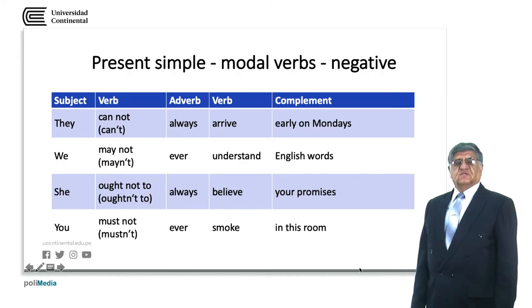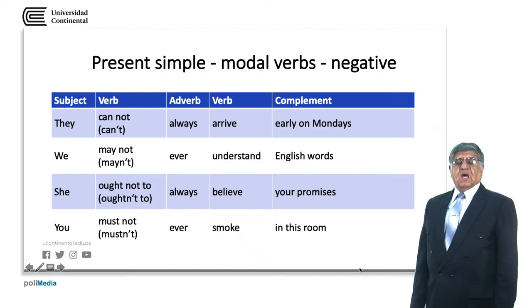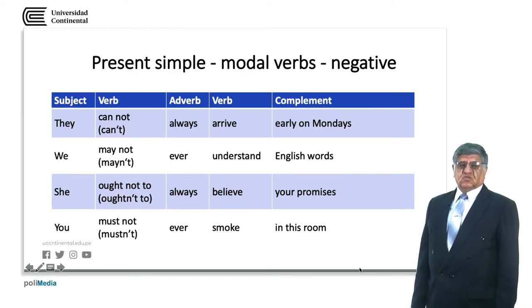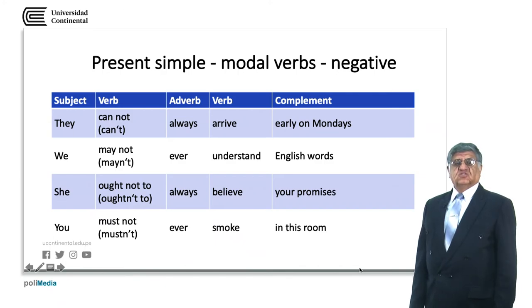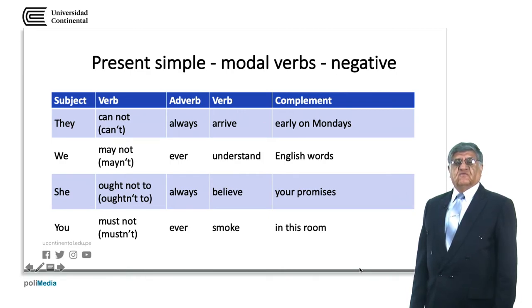In the following examples we have the same pattern and structure. May not — uncontracted; might not; ought not to — uncontracted; 'oughtn't to' — not much used. Also, 'mustn't' is more common than the others, and 'can't' is the most common. The adverbs 'always', 'ever', and 'never' are the adverbs; the verbs 'arrive', 'understand', 'believe', and 'smoke' are infinitive forms; and the complements are as shown.